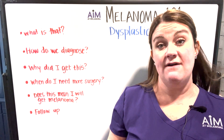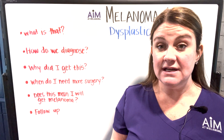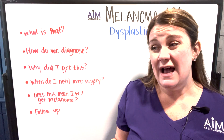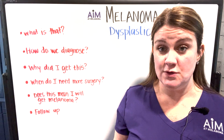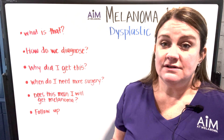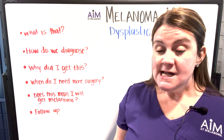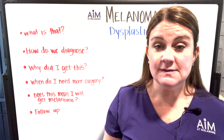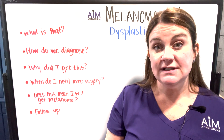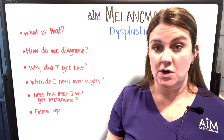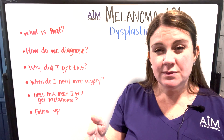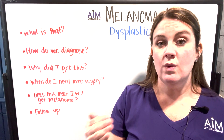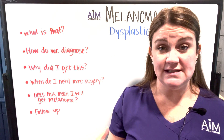Why did I get this? A lot of times folks will come in having had prior dysplastic nevi — again, it can be a predetermined genetic thing. You can also have some dysplastic nevi from pretty bad sun exposure. When do you need more surgery? Really it's for patients that have severely dysplastic moles with a positive margin, and that's extremely important because the border between severely dysplastic and melanoma can sometimes be extremely tight.